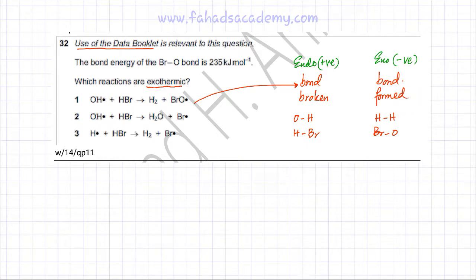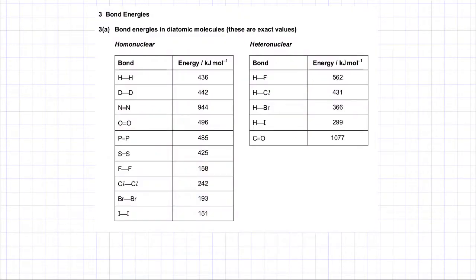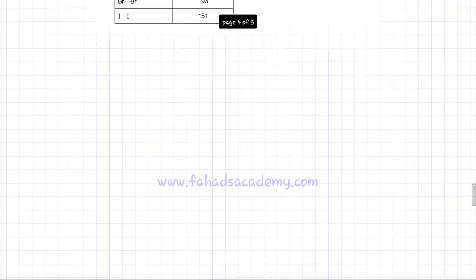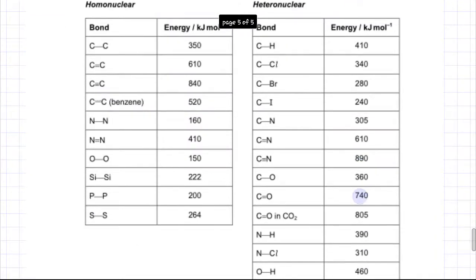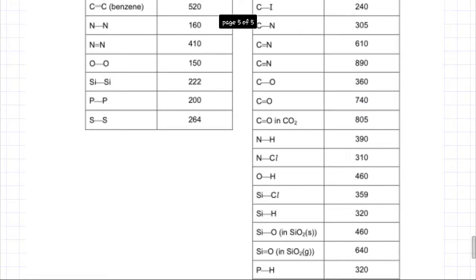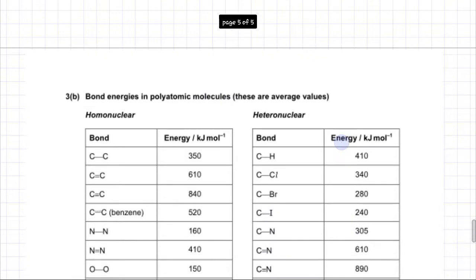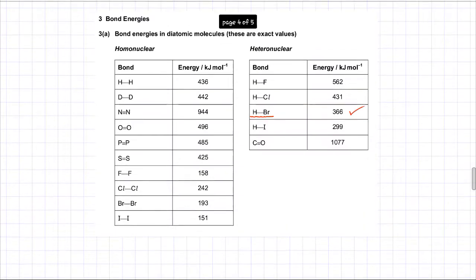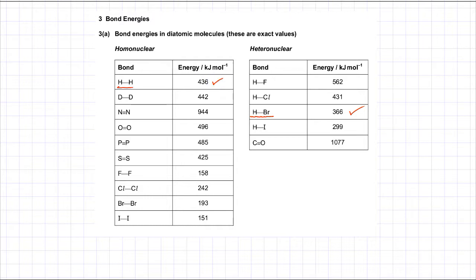Referring to the data booklet: the HBr bond energy is 366 kilojoules per mole. The OH bond energy is also found in the data booklet at 460 kilojoules per mole. The HH bond energy is 436 kilojoules per mole. The BrO bond energy is already given in the question as 235 kilojoules per mole.